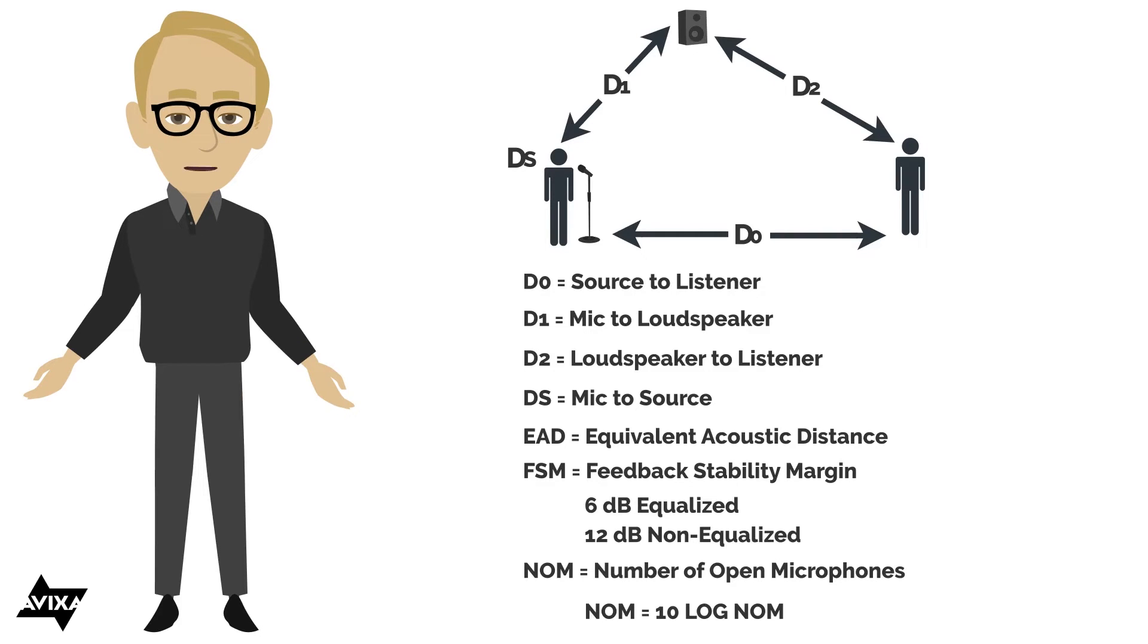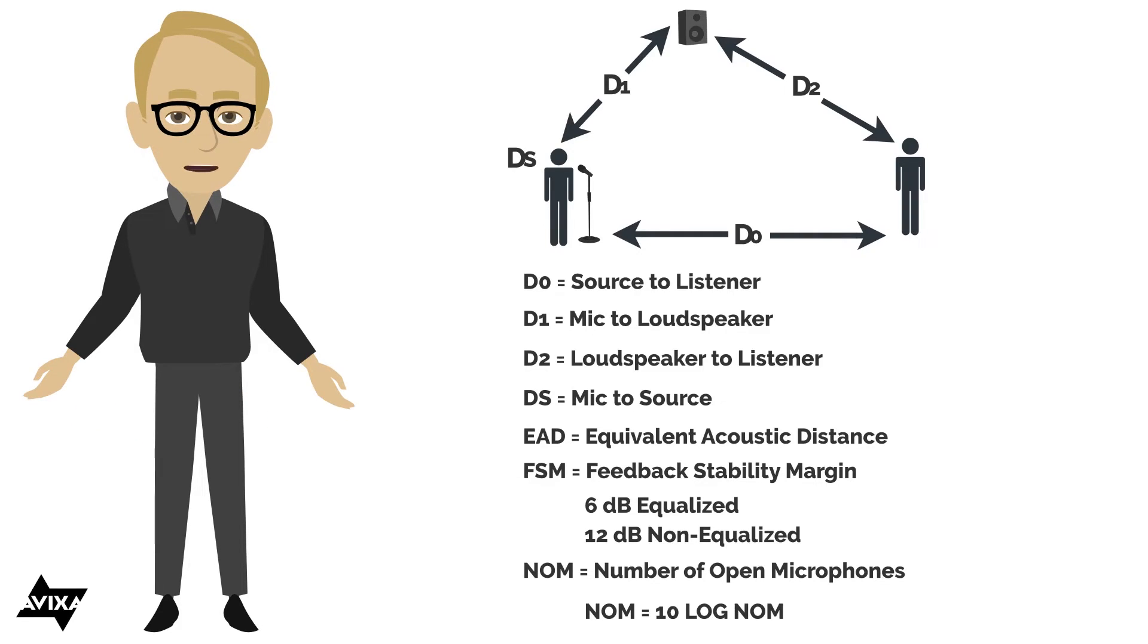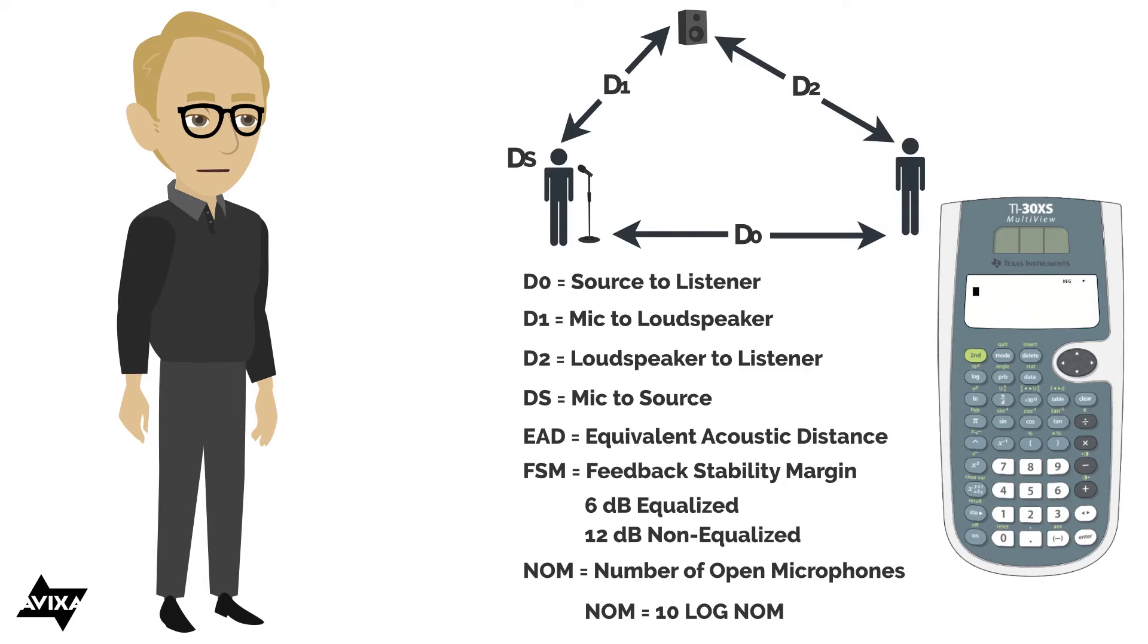If we use an automatic microphone mixer, you'll find that the equivalent output of an automatic microphone mixer is only one open microphone. That's the beauty of having an automatic microphone mixer. So if I had, in the NOM here, 10 times the log of the number of open microphones. So if I just have one open microphone, 10 times the log of 1. And let's see what that works out as. I'm just using this as an example. 10 times the log of 1. One open microphone like an auto mixer. You'll find the NOM in this case will be 0.